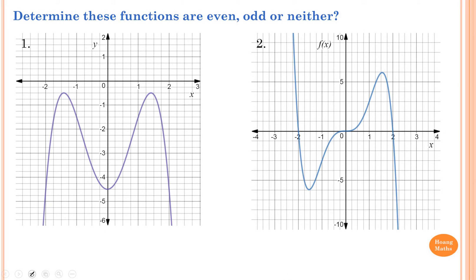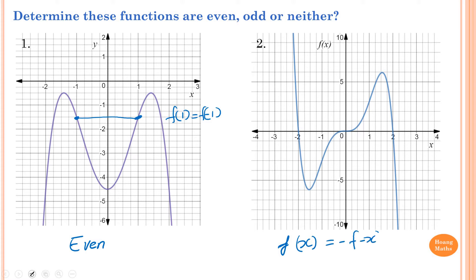Please stop the video and do these two questions yourself. The first question is even, because f(1) is this value here and f(-1) is the same. So f(1) is equal to f(-1), therefore it's even. The second question is odd, because f(-x) is equal to negative f(x). When x is 1, it gives this value, and at x equals negative 1, it's the same value but on the opposite side.